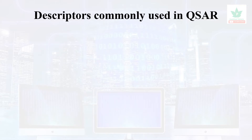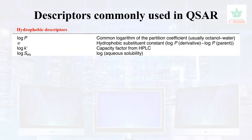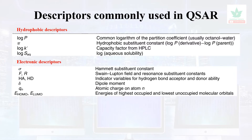Descriptors commonly used in QSAR: first, hydrophobic descriptors — log P, Pi, and log S. These are all hydrophobic descriptors. Electronic descriptors include Hammett substitution constant, dipole moment, atomic charge, Swain-Lupton field and resonance constants. These are all electronic descriptors.